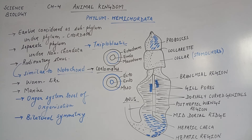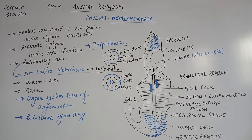Triploblastic means embryonic development from three germ layers: Ectoderm, Endoderm and Mesoderm. Mesoderm is not present in Diploblastic organisms. But since Hemichordata is a Triploblastic organism, the embryonic development is from three germ layers. In the adult, we call them Coelomates - meaning True Coelom is present in Hemichordata. The Mesodermal Layer, as you can see in the diagram, is completely present. If it were present in patches it would be mesogelial, but because it is a complete layer, it is Coelomate.